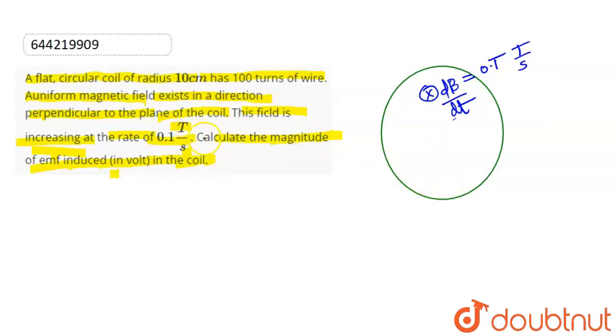The other given value is the radius R, which is 10 cm or 0.1 meters. And the number of turns is 100.